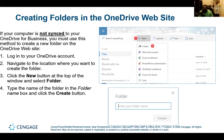If your computer is not synced to your OneDrive for Business, you must use this method to create a new folder on the OneDrive website. 1. Log into your OneDrive account. 2. Navigate to the location where you want to create the folder. 3. Click the New button at the top of the window and select Folder. 4. Type the name of the folder in the folder name box and click the Create button.